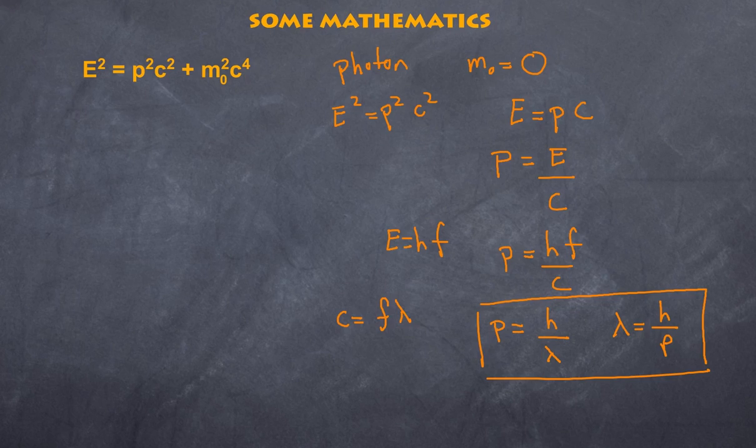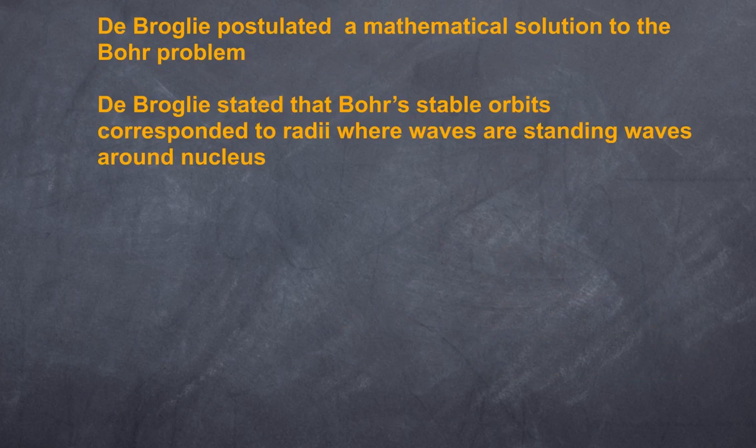So how did he take this further? Well de Broglie postulated a mathematical solution to the Bohr problem. He said well if an electron has a wavelength then what it's going to be doing is forming a standing wave around the nucleus.